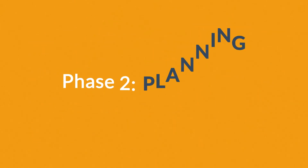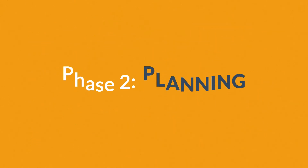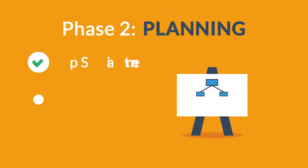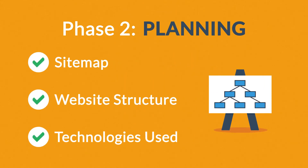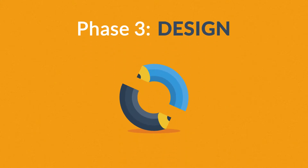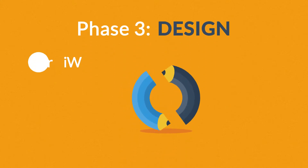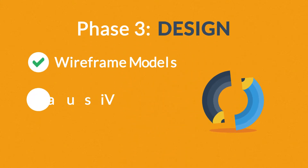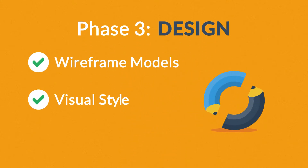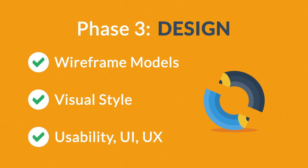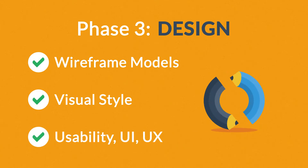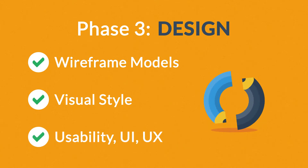Phase 2: Planning. A plan includes a definition of the sitemap, structure, and technologies that we're about to use. Phase 3: Design. Not only do we focus on wireframe models and the visual style in this stage, but also on the usability of the user interface for the best possible user experience.